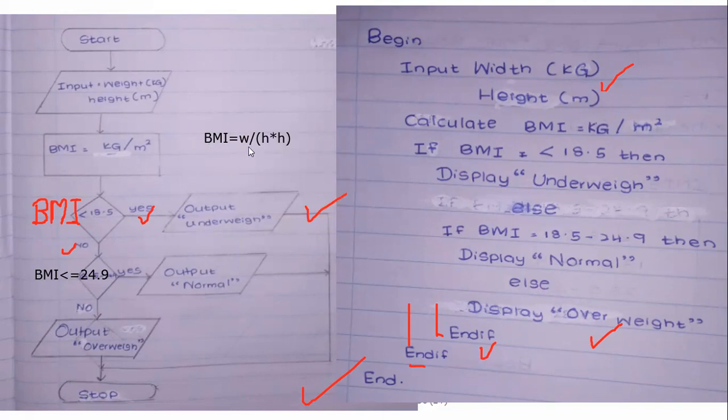BMI is equal to W divided by height times height — very clearly, height squared.